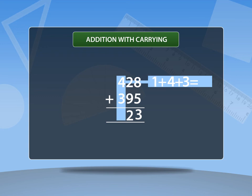Add hundreds place. 1 plus 4 plus 3 is equal to 8. Write 8 down. Answer is 823. This is addition with carrying.